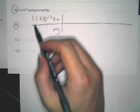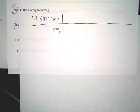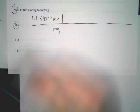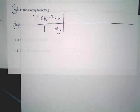So if we're going at 1.1 times 10 to the negative third kilometers, some derived unit here, that means that's per one milligram. The bottom number is always one in this first one - always.